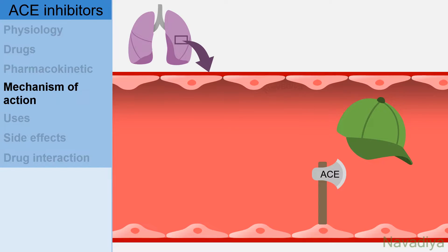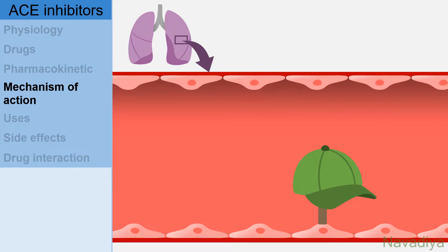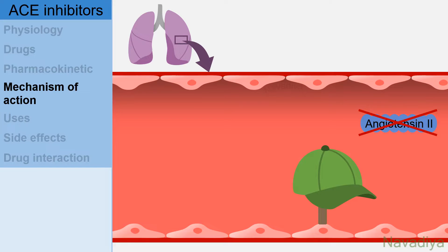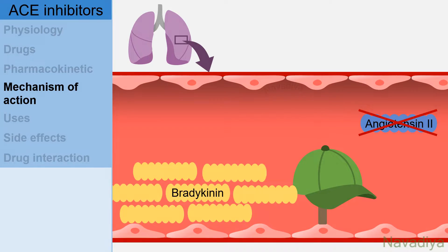Now let's see the mechanism of action. ACE inhibitors inhibit ACE. This results in reduced synthesis of angiotensin II and accumulation of bradykinin. We will see the subsequent effects with the uses.